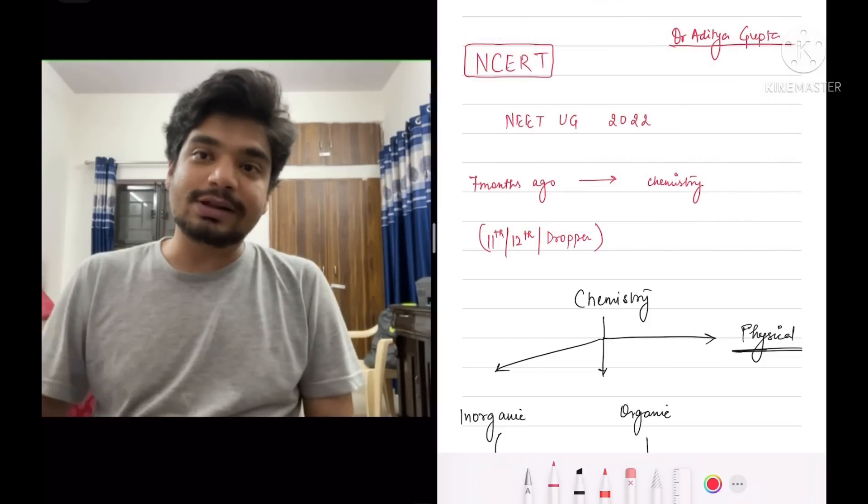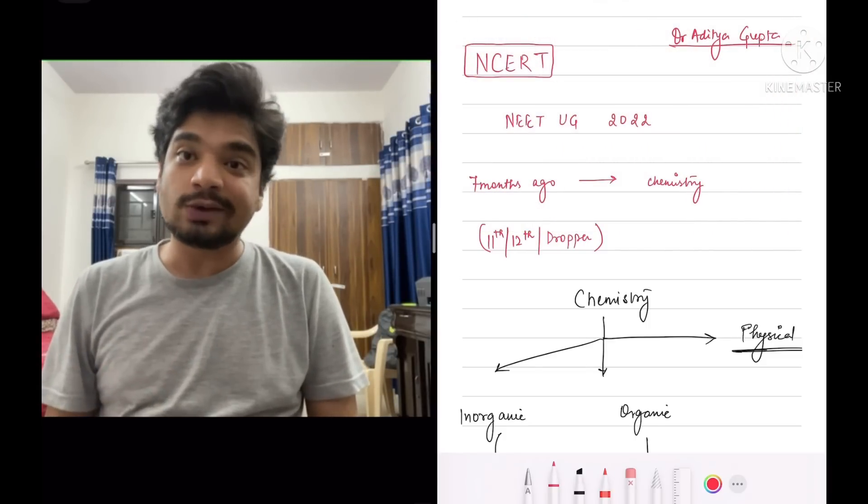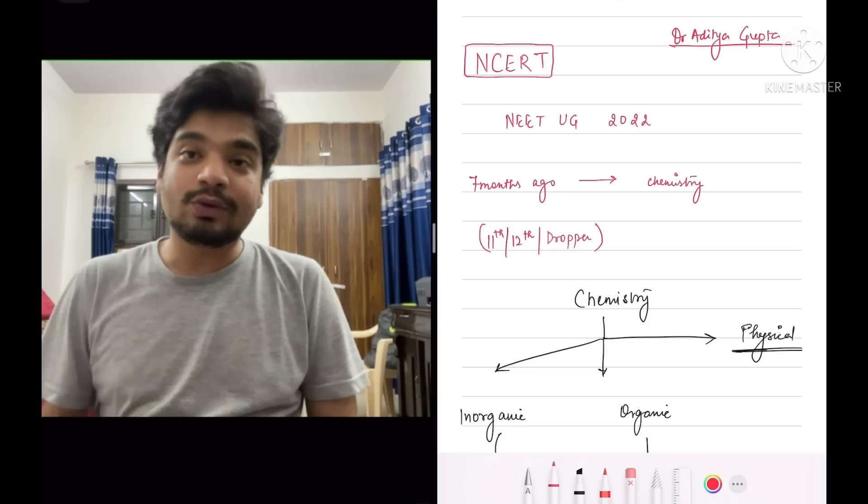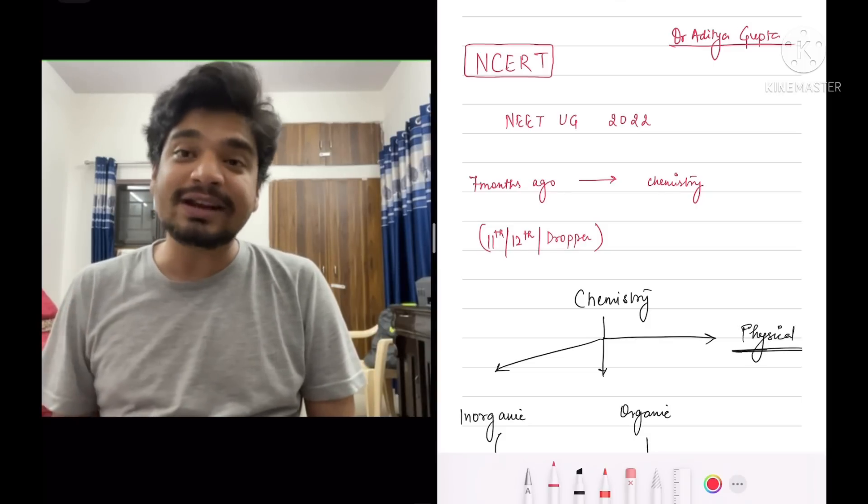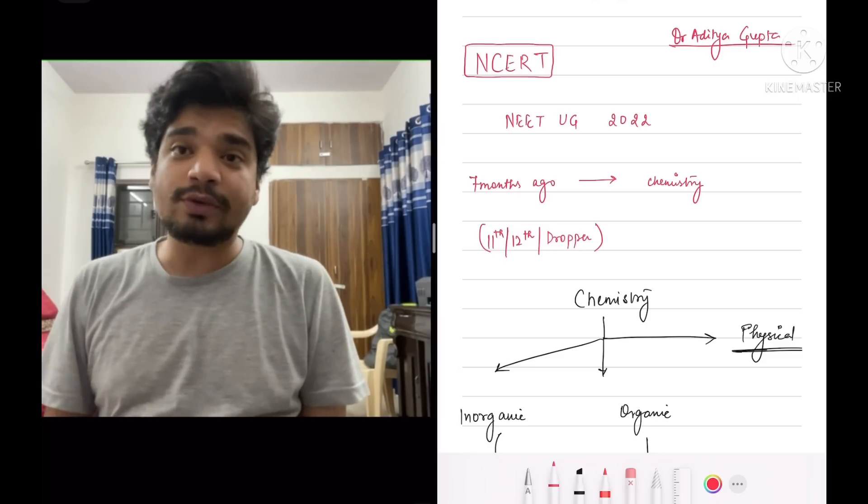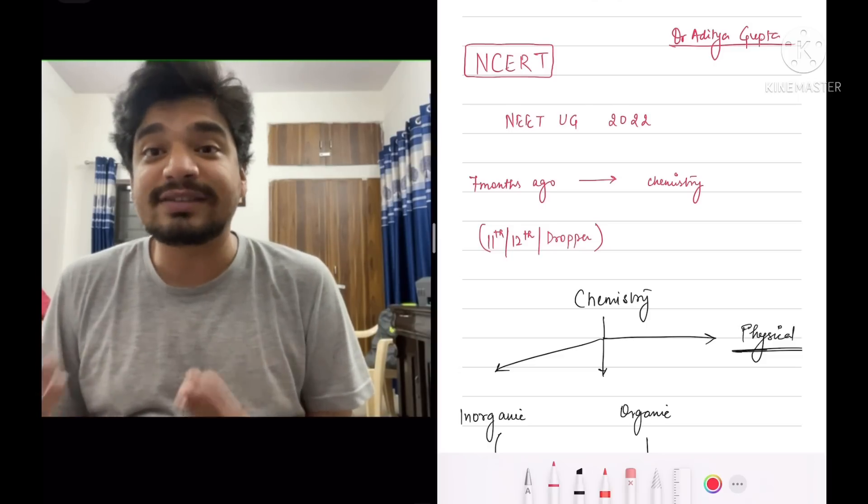In fact, for chemistry as well, the single most important book that will fetch you the maximum marks is NCERT. Not even a single question in this year's NEET-UG paper in chemistry was outside of NCERT and that actually has been the trend for multiple years. 90-95% of the paper even in chemistry almost always used to be from NCERT. I don't know why people could not see it.